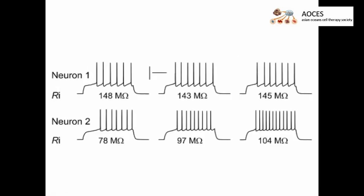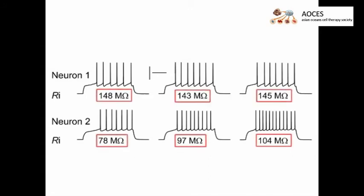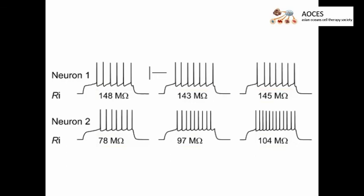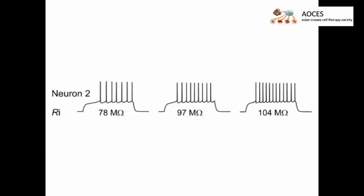And here is an example of the traces from two neurons showing the effect of input resistance on the neuron capability to generate spikes. Neurons are current clamped and held at minus 80 millivolts. When input resistance increases, the number of action potentials increases as well.